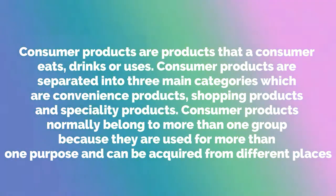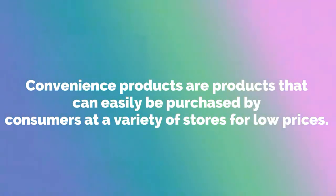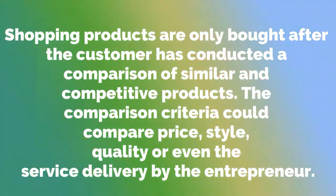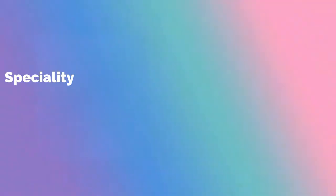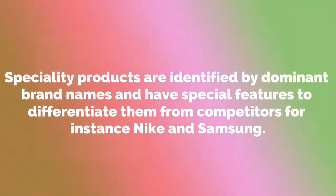Consumer products normally belong to more than one group because they are used for more than one purpose and can be acquired from different places. Convenience products are products that can easily be purchased by a consumer at a variety of stores for low prices. Shopping products are only bought after the customer has conducted a comparison of similar and competitive products. The comparison criteria could compare price, style, quality or even the service delivery by the entrepreneur. Speciality products are identified by dominant brand names and have special features to differentiate them from competitors, for instance Nike and Samsung.